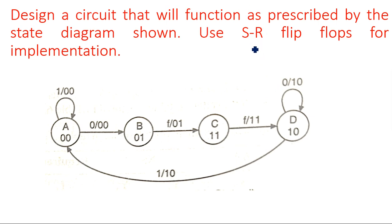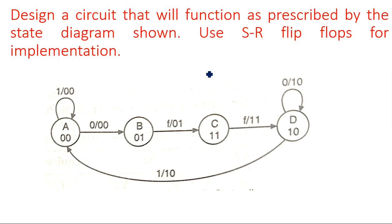Whatever may be the flip-flop — suppose if it is asked for JK flip-flop, we need to identify what is the input expression, the Boolean expression for J and Boolean expression for K. How many states are there? That many flip-flops will be there. Here we have 4 states, which means 2 flip-flops. For 2 states we will have 2 flip-flops — it is a 2-bit flip-flop giving 4 combinations like ABCD. So for those 2 flip-flops, S1, R1 for one flip-flop and S2, R2 for the other — totally 4 Boolean expressions we need to identify.